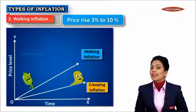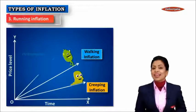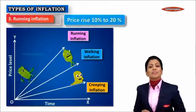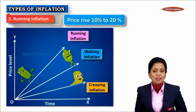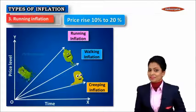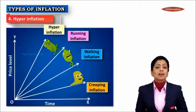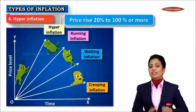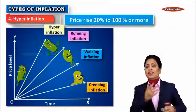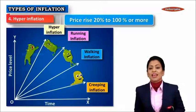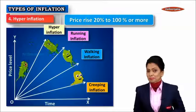The third type of price rise is known as running inflation, in which the price monster starts running at the speed of 10 to 20 percent per annum — which is quite dangerous. The fourth type is known as hyperinflation or galloping inflation, in which price rises are from 20 to 100, 200, 300, 500 percent and so on. Those were the four types of inflation.